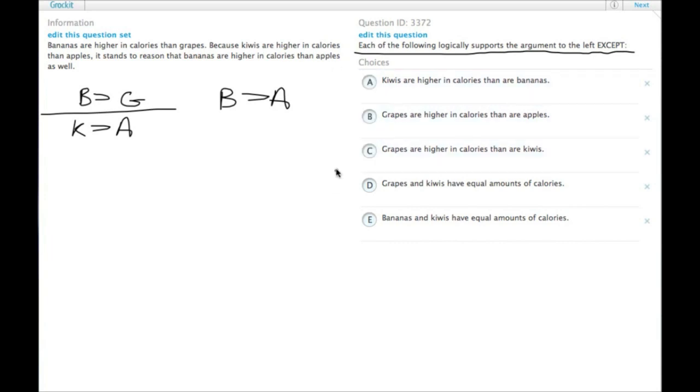What this is telling us is that four of the answer choices will give us that connection between B and A, and one of them won't.